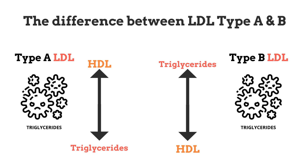It is very important to distinguish the difference between LDL Type A and Type B when you get an LDL test or cholesterol routine assessment. Pay attention to what type of LDL you are having. For example, if your HDL is high and your triglycerides are low, then the LDL type you have is Type A, which is considered safe regardless of the overall LDL results. On the other hand, when triglycerides are high and HDL is low, then the LDL type you have is Type B, which is considered high risk.